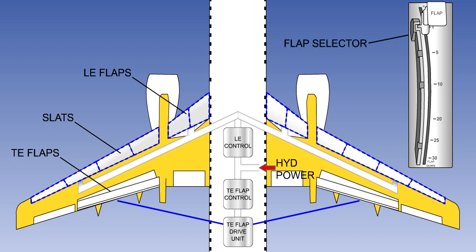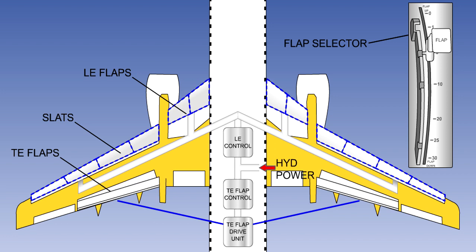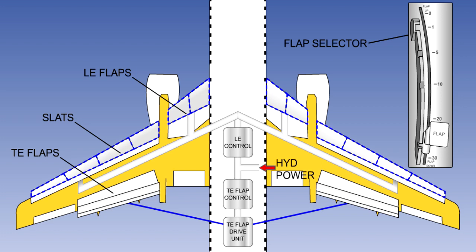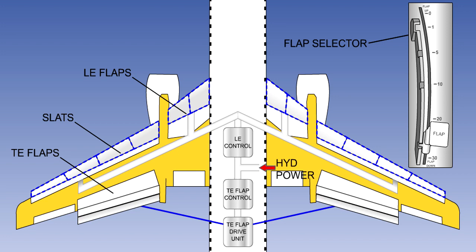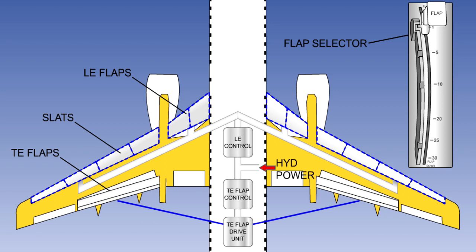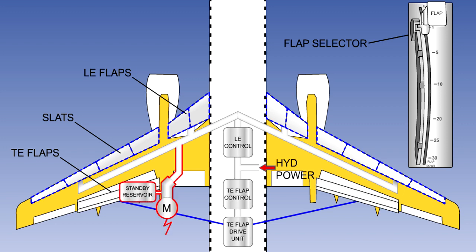The leading edge flap or slat extension sequencing varies with aircraft type. On the Boeing 737, the leading edge flaps extend fully and slats extend to the midway position when the trailing edge flaps extend to their first position. When the trailing edge flaps are fully lowered, the slats extend fully. The sequence is reversed when the flaps are retracted. Whatever extension sequence is used, the leading edge flaps and slats will normally be retracted when the trailing edge flaps are retracted. Alternate operation of the leading edge devices may be by a standby hydraulic system, or, in the case of those powered by air turbine motors, an electrical standby system. Depending on the aircraft type, it may or may not be possible to retract the leading edge devices by the alternate system.